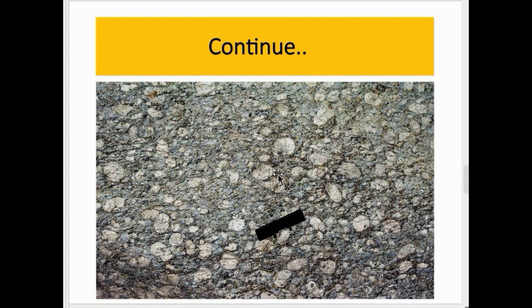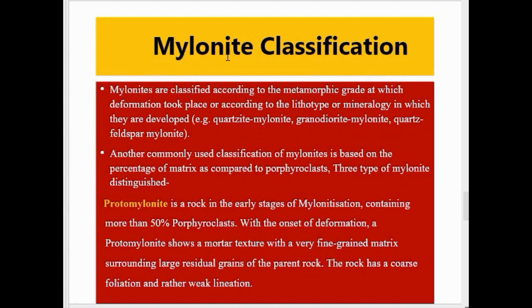Here you can see the texture of mylonite rock — highly crushed and deformed, showing the groundmass and porphyroclasts. Mineralogy changes as per temperature, pressure, fluids, and related factors. Mylonites are classified according to the metamorphic grade at which deformation took place, or according to lithotype or mineralogy — for example, quartzite mylonite, granodiorite mylonite, or quartz-feldspar mylonite. Another commonly used classification is based on the percentage of matrix compared to porphyroclasts.